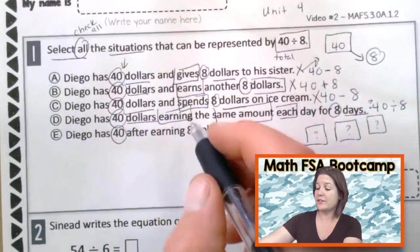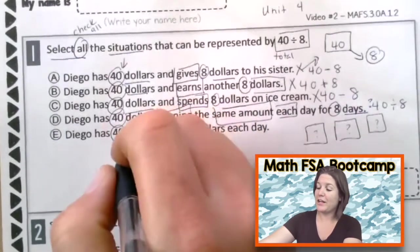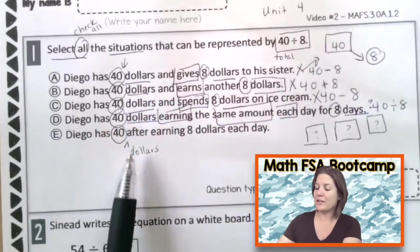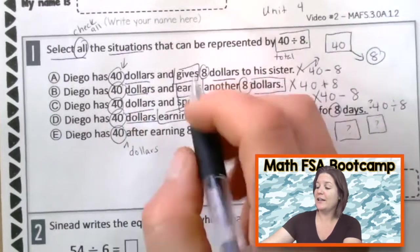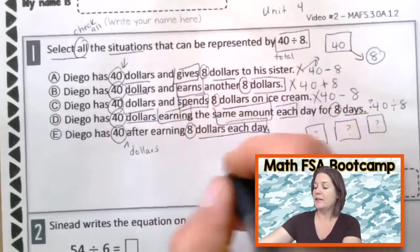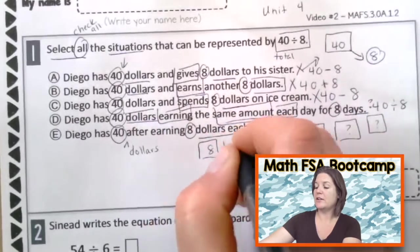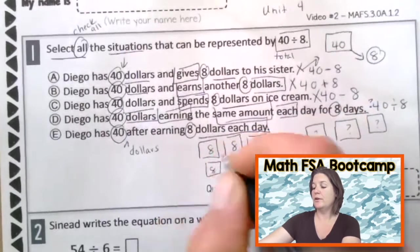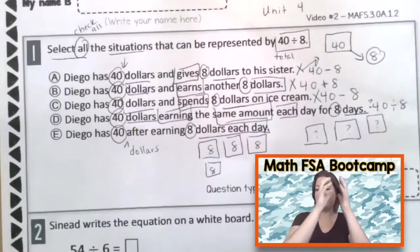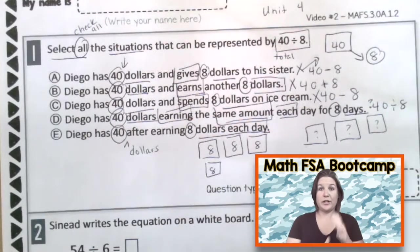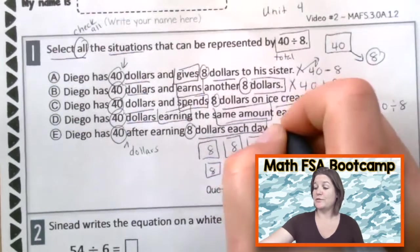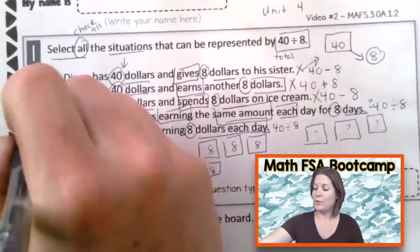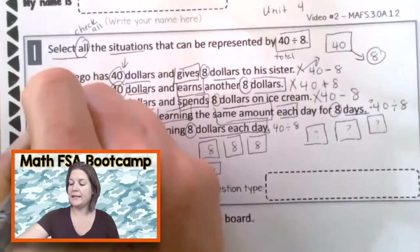Diego has $40 dollars after earning $8 each day. So each day he earns $8 until he gets to 40, right? So if he has $40 and he's earning $8, $8, $8, $8, $8, that would be division is $40 that we're dividing out into $8 each day. So we're going to go ahead and mark D and E both of them. Which means these are, and it said select all there.